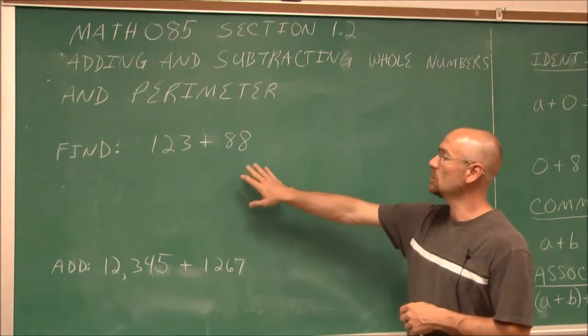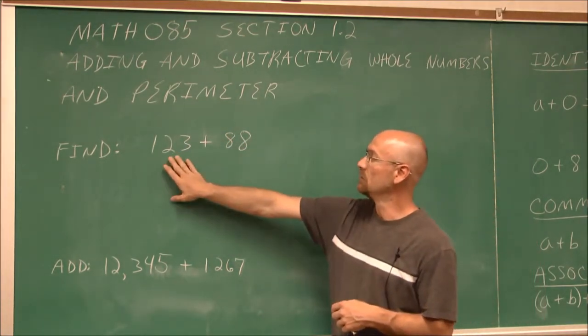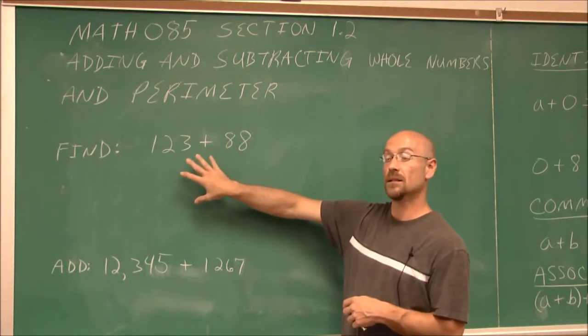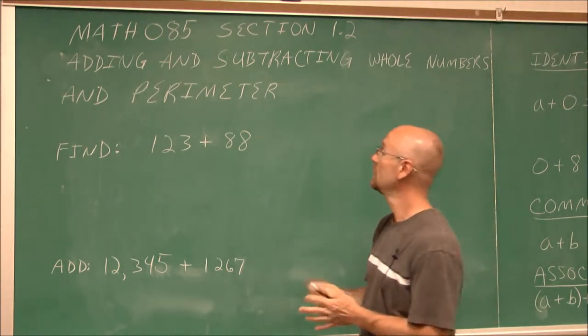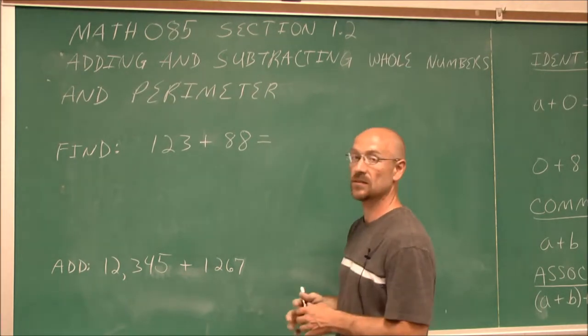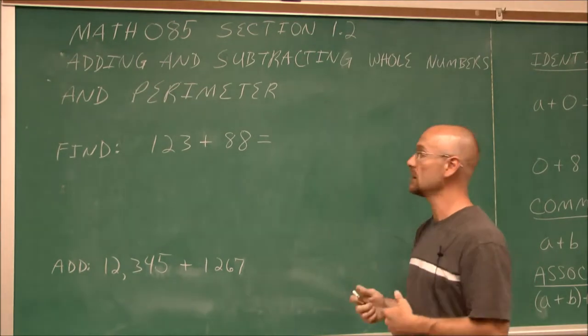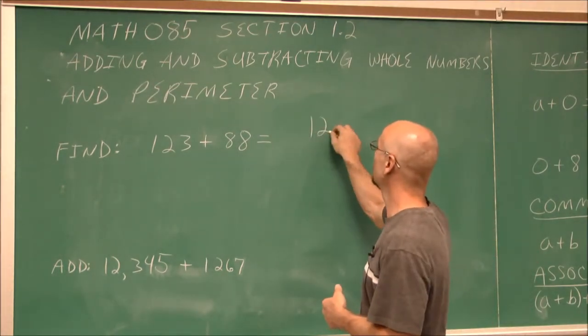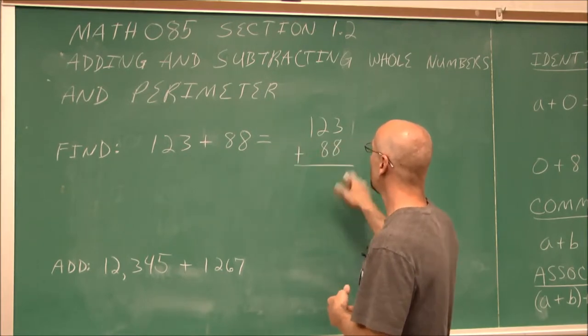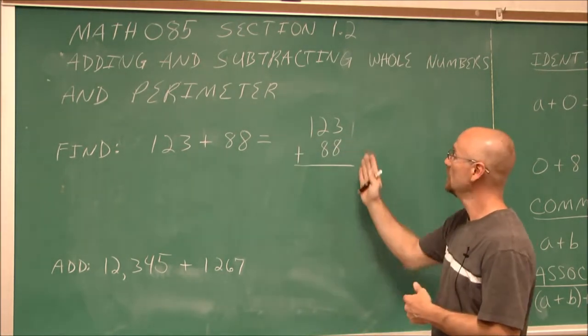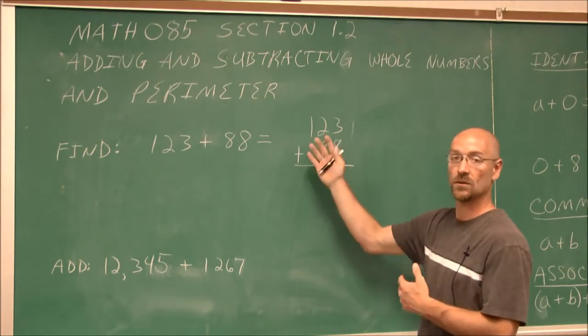Another thing we want to define is what the values are. When we're talking about addition, the values that we are going to combine together are called the addends. And the result that we get from our addends is called the sum. Now, many of us when we first learned how to add, we did it horizontally. We have the ones that line up, the tens that line up, the hundreds, and so on.